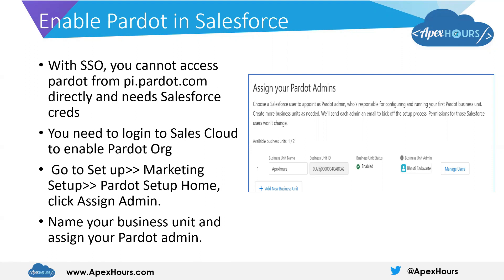You go to Salesforce — login.salesforce.com — and then from Salesforce, you need to enable your Pardot org. To do that, go to Setup, then Marketing Setup, then Pardot Setup Home, and click on Assign Admin.